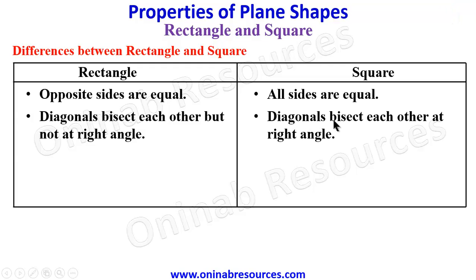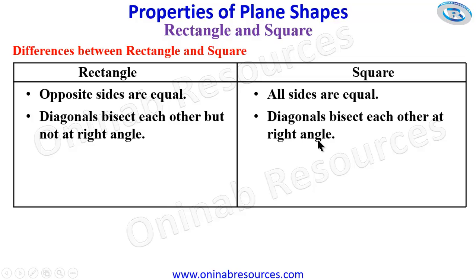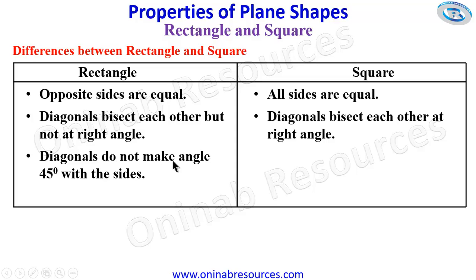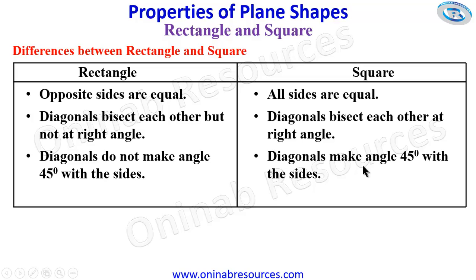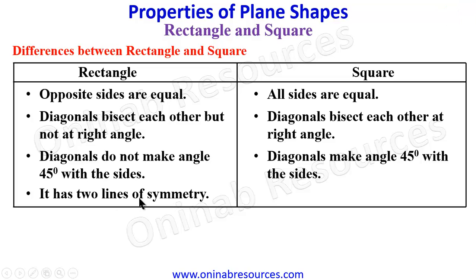The next difference is: for a rectangle, diagonals bisect each other but not at right angle, while for a square, diagonals bisect each other at right angle — the angle between the diagonals of a square is a right angle. Also, for a rectangle, the diagonals do not make 45 degrees with the sides.